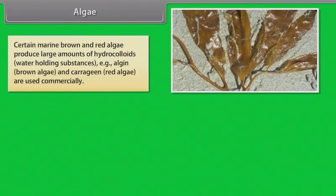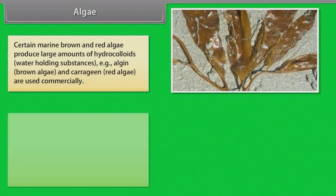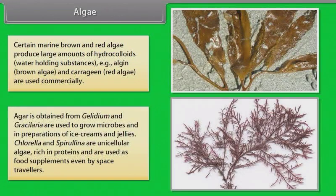Certain marine brown and red algae produce large amounts of hydrocolloids, water holding substances, that is algin from brown algae and carrageenan from red algae are used commercially. Agar is obtained from Gelidium and Gracilaria and are used to grow microbes and in preparations of ice creams and jellies. Chlorella and spirulina are unicellular algae rich in proteins and are used as food supplements even by space travelers.